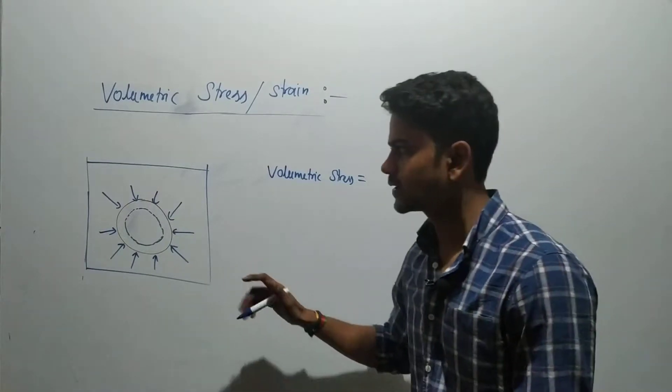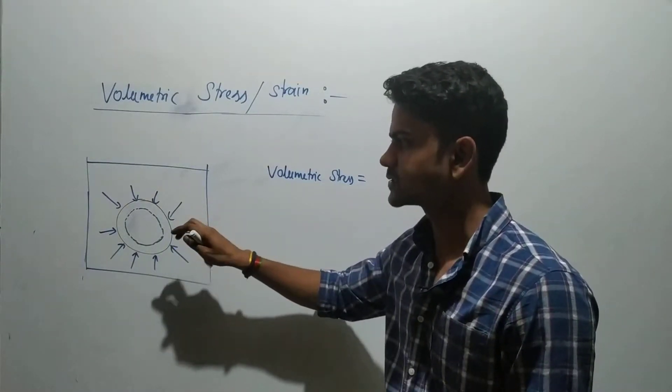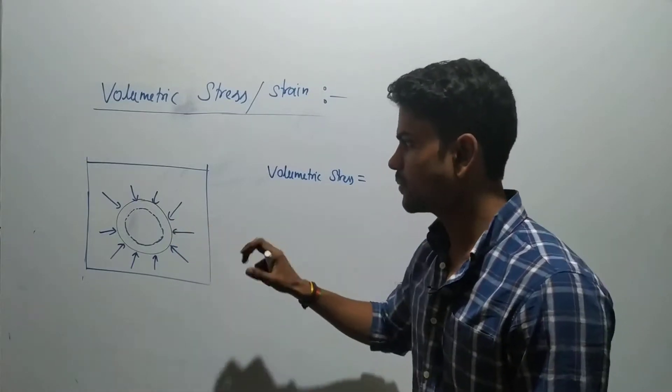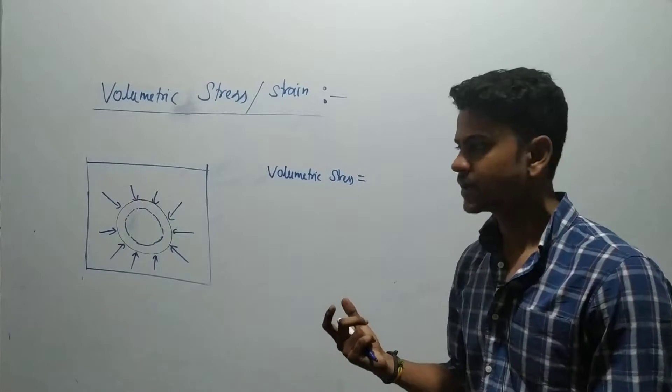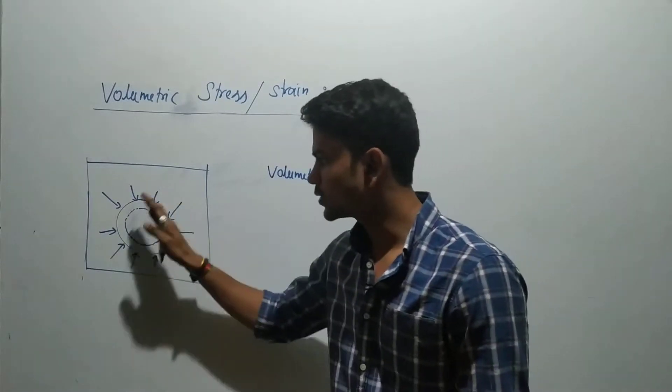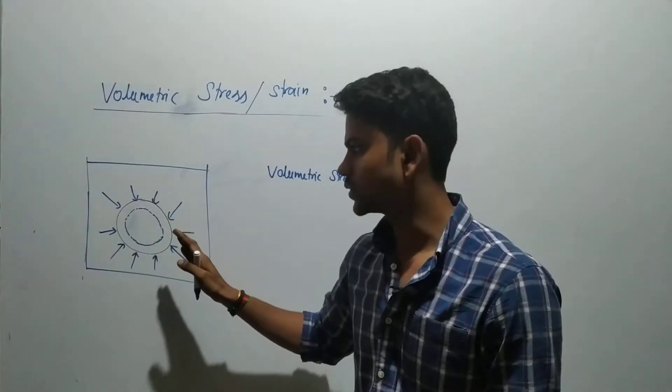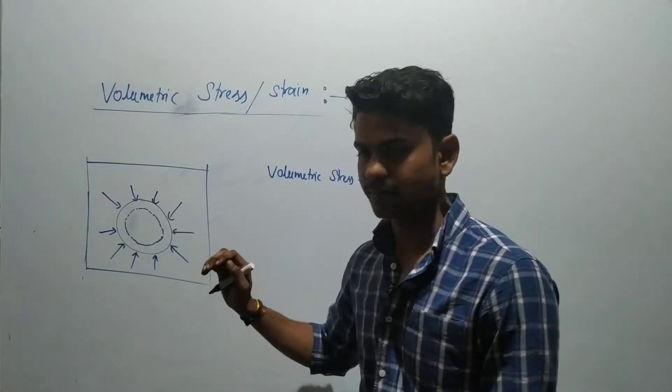To understand this, we have a setup where a given body is kept inside a fluid. Why am I taking a fluid? Because according to the definition of volumetric stress, you have to apply your force entirely on the total area of the given body throughout the whole area.